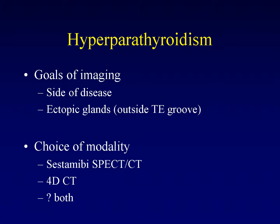The clinical scenario in which we are most commonly looking at the parathyroid glands is not the incidental mass — it's most commonly hyperparathyroidism. Why are we imaging in the setting of hyperparathyroidism? Well, you don't have to. Some surgeons will just go in and start removing parathyroid glands until they find the one they like. But you can really make it an easier surgery if you can tell them which side to start on. Our goals of imaging are to find the side of the disease — just left or right — and to look for ectopic glands, those outside the normal tracheoesophageal groove.